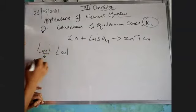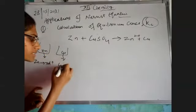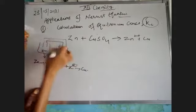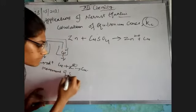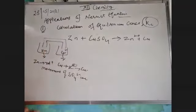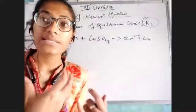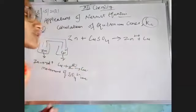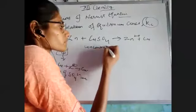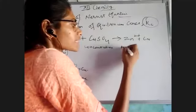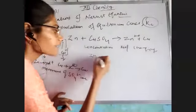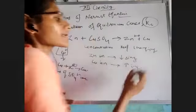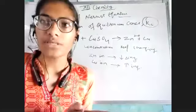What happens in an electrochemical cell is that whenever we start the reaction, after some time my zinc is converting to Zn²⁺ and Cu²⁺ is converting to copper. With the help of the salt bridge, there was a movement of sulfate ions. I want to say that there is so much movement of ions whenever the electrochemical cell is in progress — whether cation, anion, or sulfate ions. So the concentration always keeps changing.